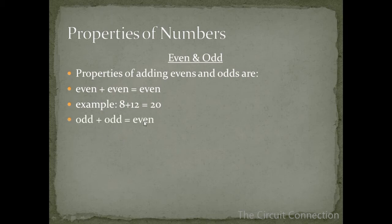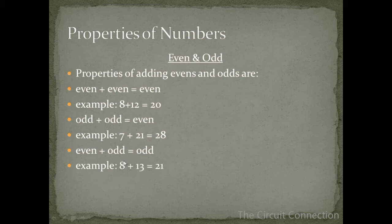An odd plus an odd gives us an even. So for example, 7 is an odd plus 21 is an odd and that gives us 28 which is an even. An even plus an odd equals an odd. So for example, 8 which is even plus 13 which is an odd gives us 21 which is also odd.